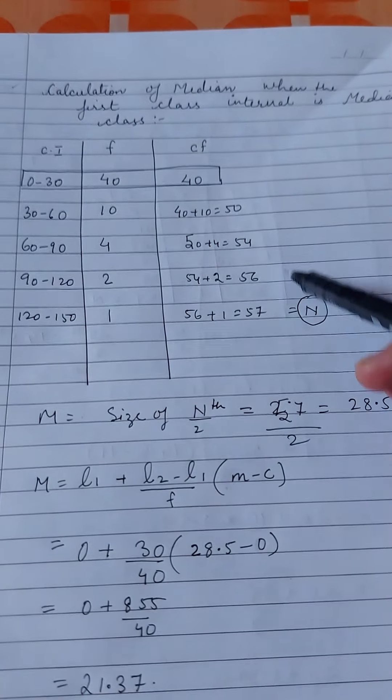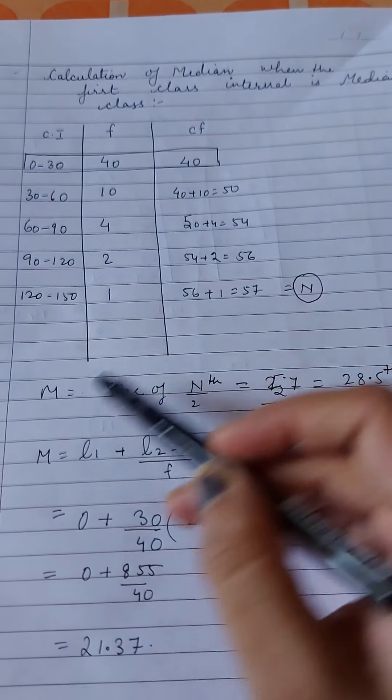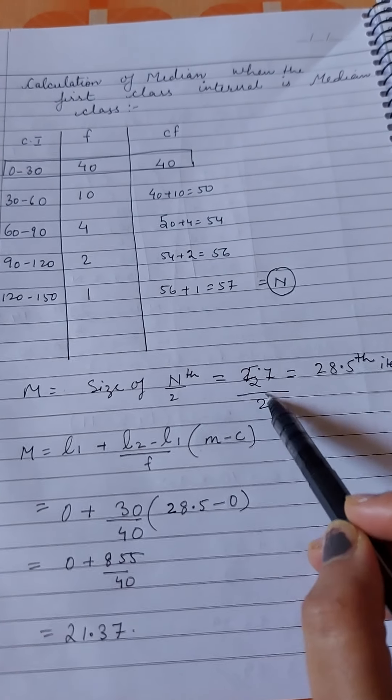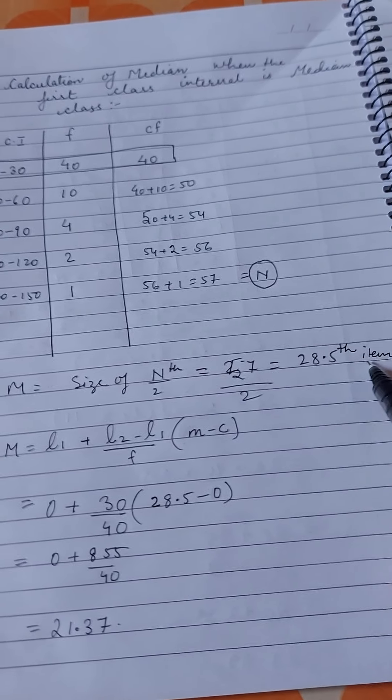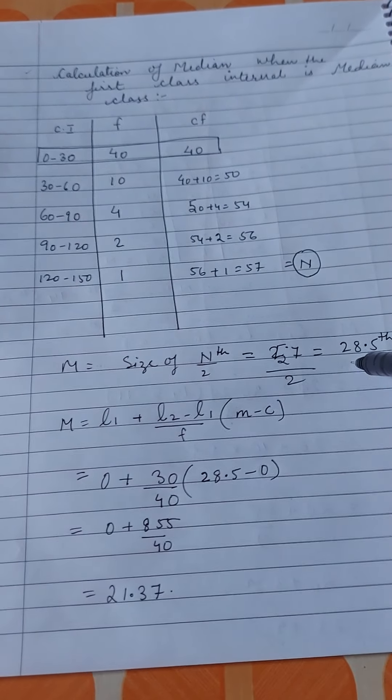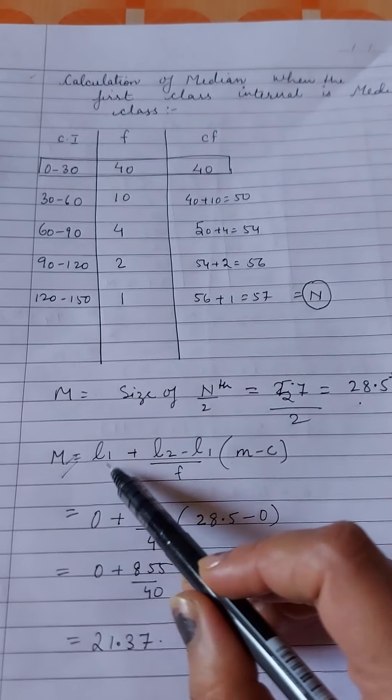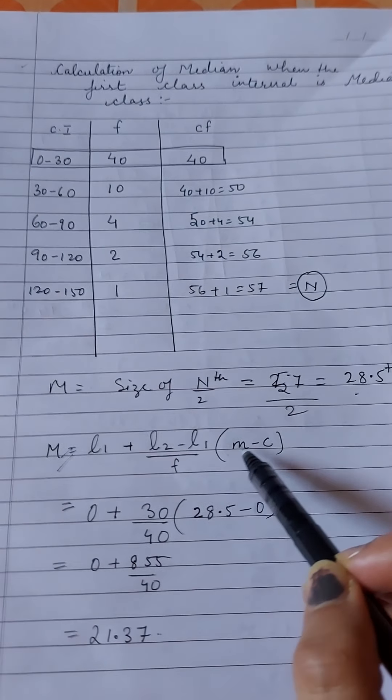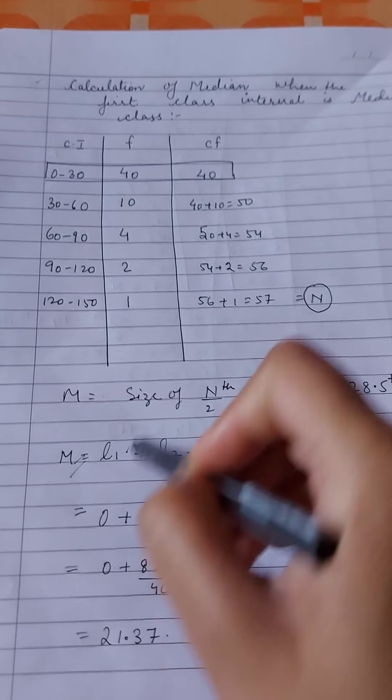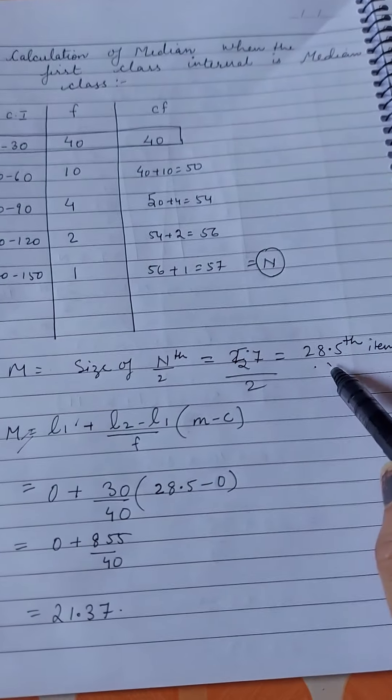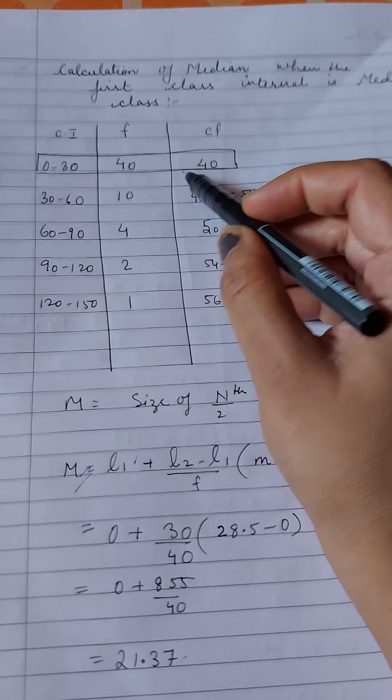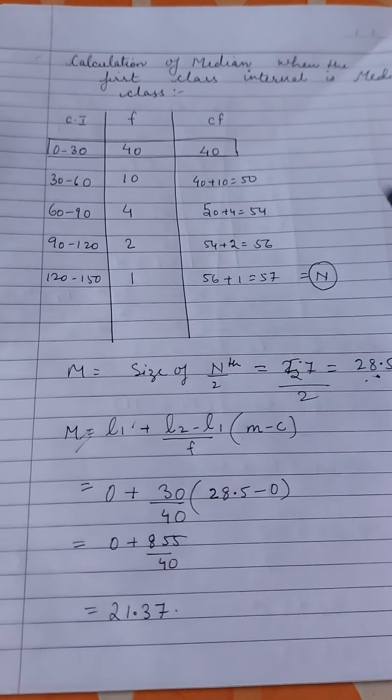Here we calculated cf, this is our n. We'll find m here, when we do 57 by 2, we get 28.5th item. So let's continue with the formula, L1 plus L2 minus L1 by (fm minus c). Since our median class is the 28.5th item, and we took median class as 0 to 30.